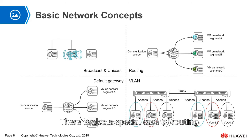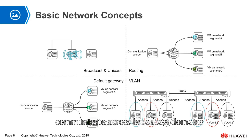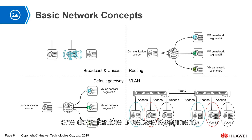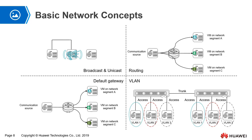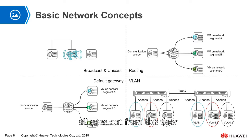There is also a special case of routing — we call it the default gateway, also known as the default route. It works the same as routing and is also used to communicate across broadcast domains, but in a different way. Imagine routing as a room with 3 doors — one for network segment A, one for B, and one for C. But the default gateway has only one door in the room. Whether it is network segment A, B, C, or even an extra network segment D, everything goes out from that one door.